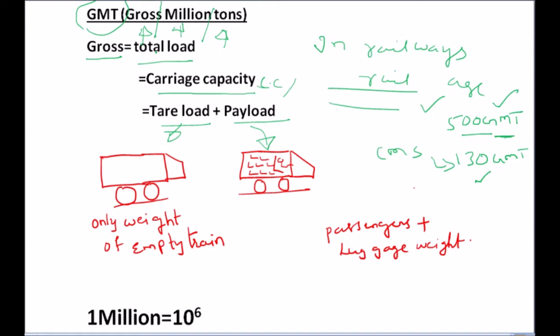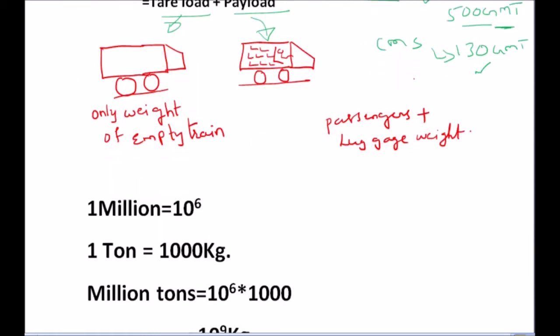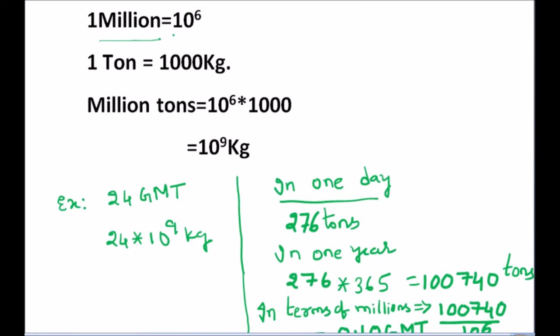1 million is equal to 10^6, and 1 ton is equal to 1000 kg. So 1 million ton is equal to 10^6 multiplied by 1000, which is equal to 10^9 kg. So GMT means total gross load, and million ton means 10^9 kg.